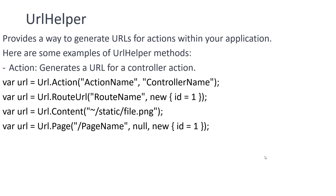The second helper method is URL helper, which provides a way to generate URLs for actions within your application. Examples of URL helper methods include URL.Action with action name and controller name, URL.RouteURL with a route name and values like new { id = 1 }, URL.Content for static files like an image file, and URL.Page with a page name and route values. Most of the time you use URL.Content to add image source properties.